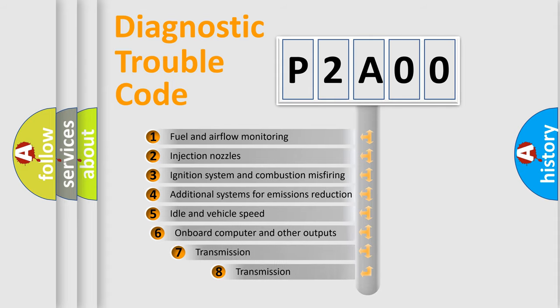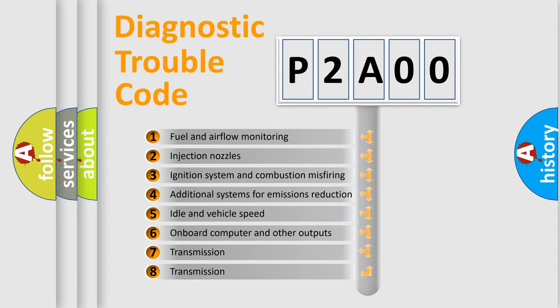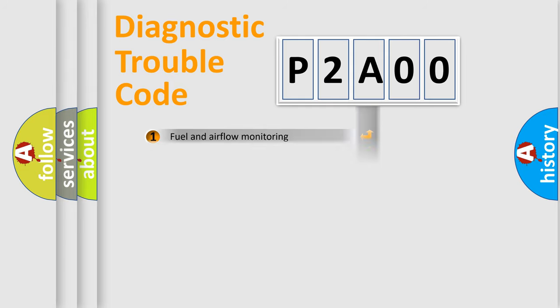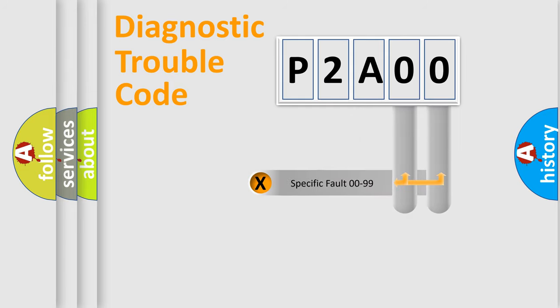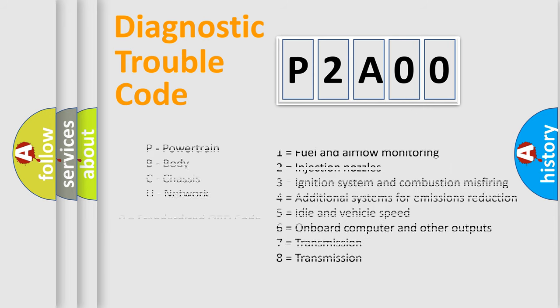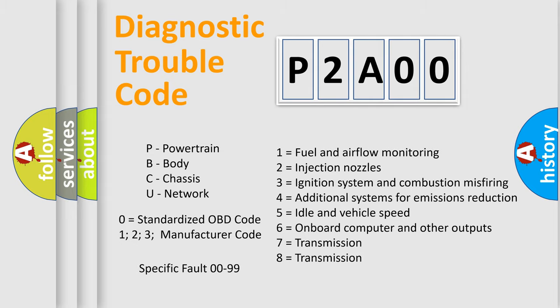The third character specifies a subset of errors. The distribution shown is valid only for the standardized DTC code. Only the last two characters define the specific fault of the group. Let's not forget that such a division is valid only if the second character code is expressed by the number zero.